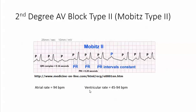The last thing we want to look at is the ventricular rate, and it's 45 to 94 beats per minute, so the ventricular rate is irregular. You have more P waves than R waves or QRS complexes. The PRI is constant and the QRS complex can either be wide or narrow — if the block occurs at the bundle of His, it's going to be a narrow QRS. All those features make up Second Degree AV Block Type 2.